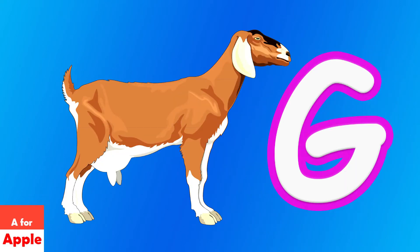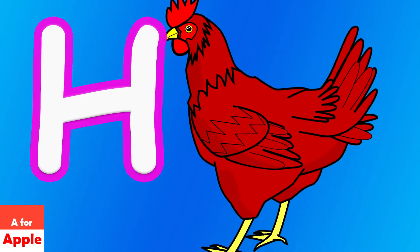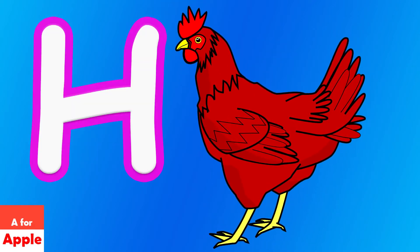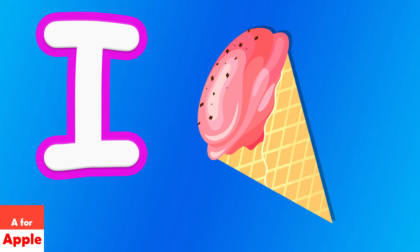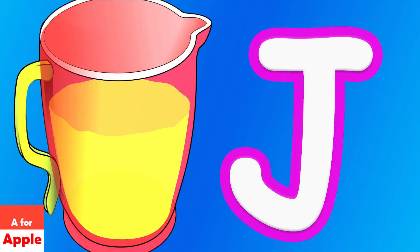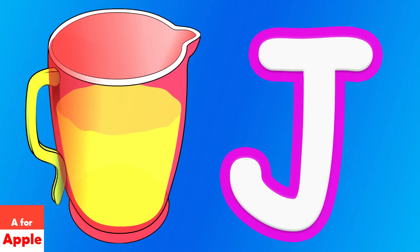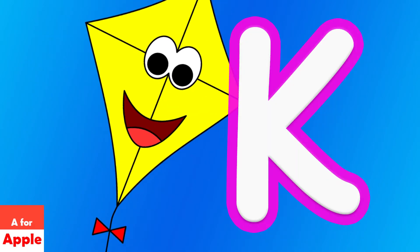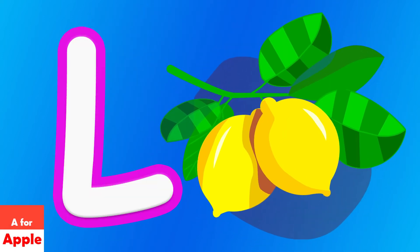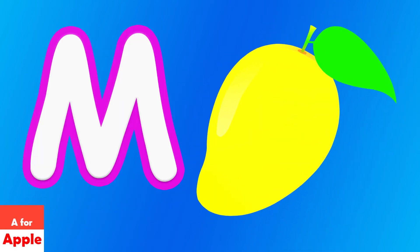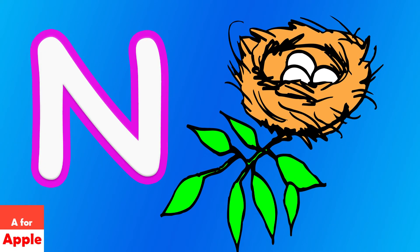G for goat, H for hen, I for ice cream, J for jar, K for kite, L for lemon, M for mango, N for nest.